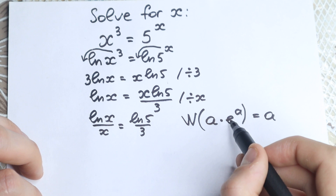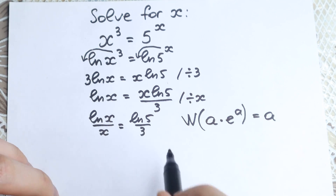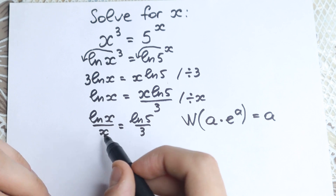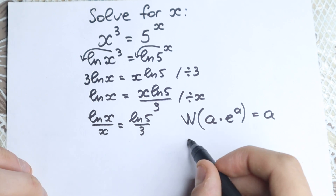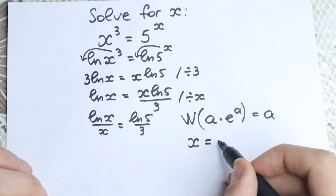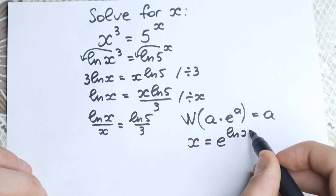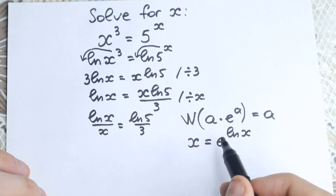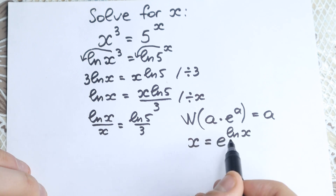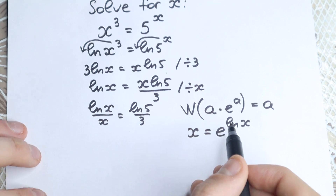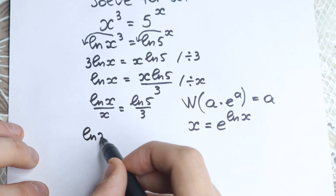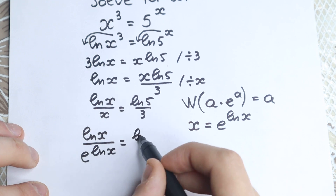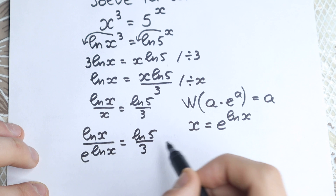But first of all, we need to create this form to apply the Lambert W function. We need to have e in our expression, and right now we don't have e, so it's a bit hard to start. But we have x, and we can write the substitution: x equals e to the power of ln(x). So instead of x in the denominator, let's write e to the power of ln(x). So we now have: ln(x) over e^(ln(x)) equal to ln(5)/3.